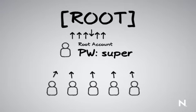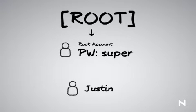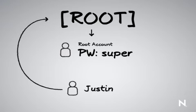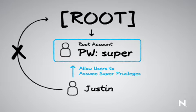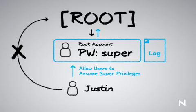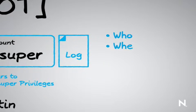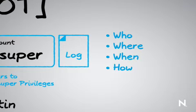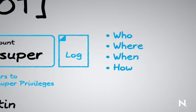Instead, I want people to work through their own account — we'll just call this person Justin. We're not going to give him the same rights as root directly; that would basically cause yet another hole in the system. Instead, I'm going to allow them to assume those super privileges, but in a way that allows me to log what that user is doing — who did it, where, when, and how. So that in the event that Justin, because he does sound like a shady individual, comes in and does something nefarious that he wasn't supposed to do, I now have a log of who it is.